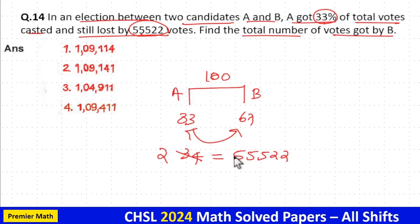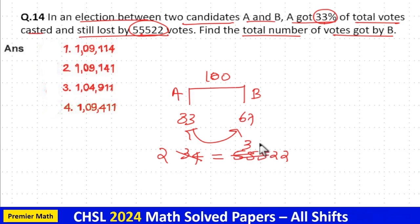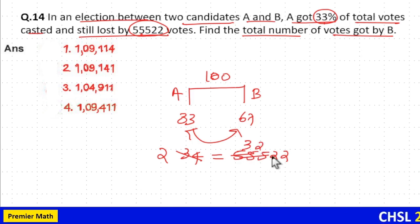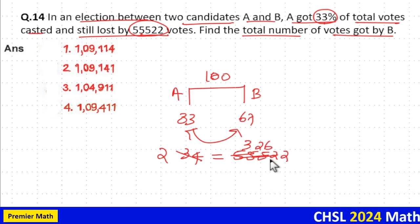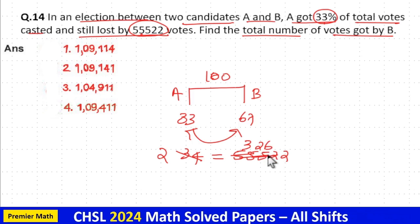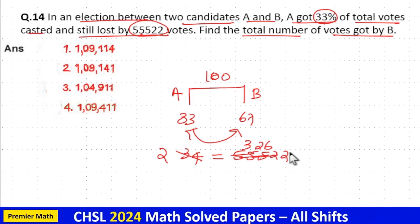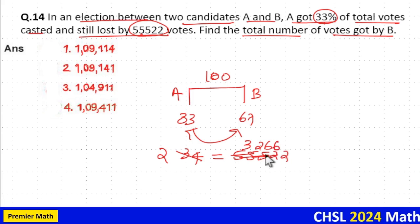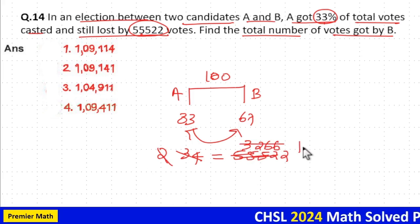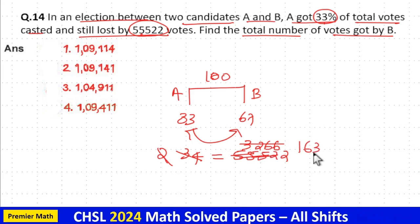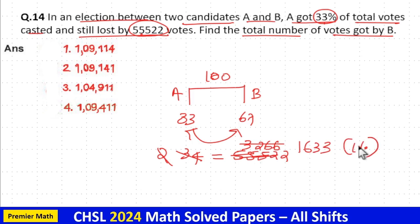Now, dividing 55,522 by 34 to find 1%: 17 goes 2 times in 34, 17 goes 3 times in 51 with remainder 4, 17 goes 2 times in 45 with remainder 11, and 17 goes 6 times in 102 (since 17×6 = 102). So 1% is equal to 1,633.